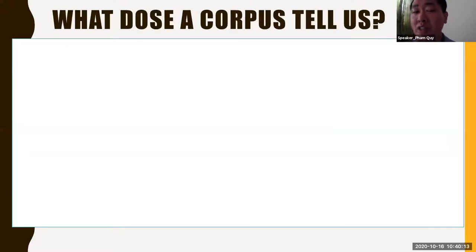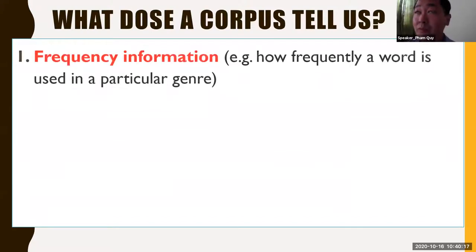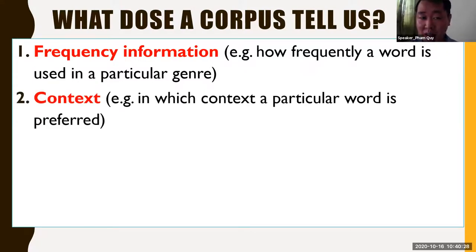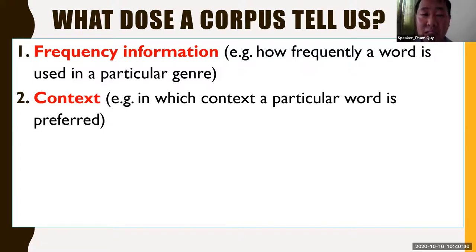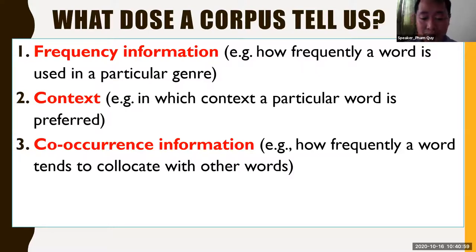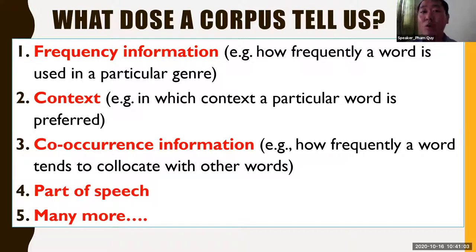You may ask yourself: what does a corpus tell us? Many things. First, a corpus can tell us frequency information — how frequently a word is used in a particular genre. A corpus can also tell us the context in which a word is used, so you can find out more information about the word. Because one word can collocate with other words, a corpus can also tell us co-occurrence information. And a corpus can tell us whether a word is commonly used as a noun or a verb, and much more.